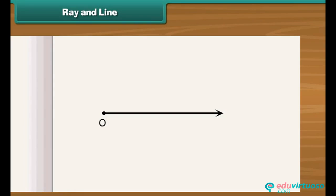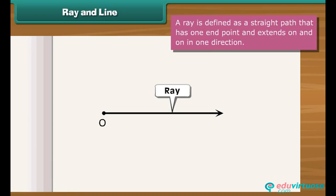What will you call this? It has one end point. On its other end, there is an arrowhead. This implies that it can be extended in the direction of the arrowhead. This is called a ray. We define a ray as a straight path that has one end point and extends on and on in one direction.